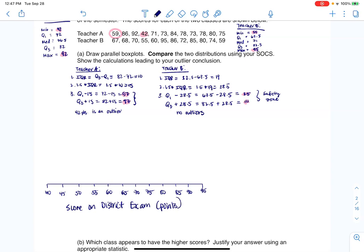I'll do teacher A first. The min is an outlier, so I'm going to put teacher A's outlier at 42. The next highest non-outlier was 59. Then I had my Q1 at 72, median at 76.5, Q3 at 82, and max at 92. I'm going to box the middle 50% and whisker out to the ends. Let me label that as teacher A.